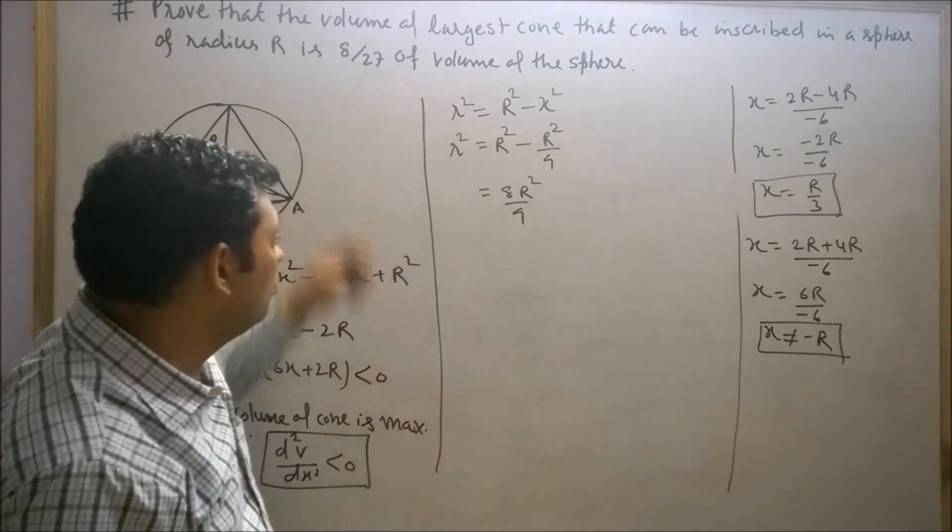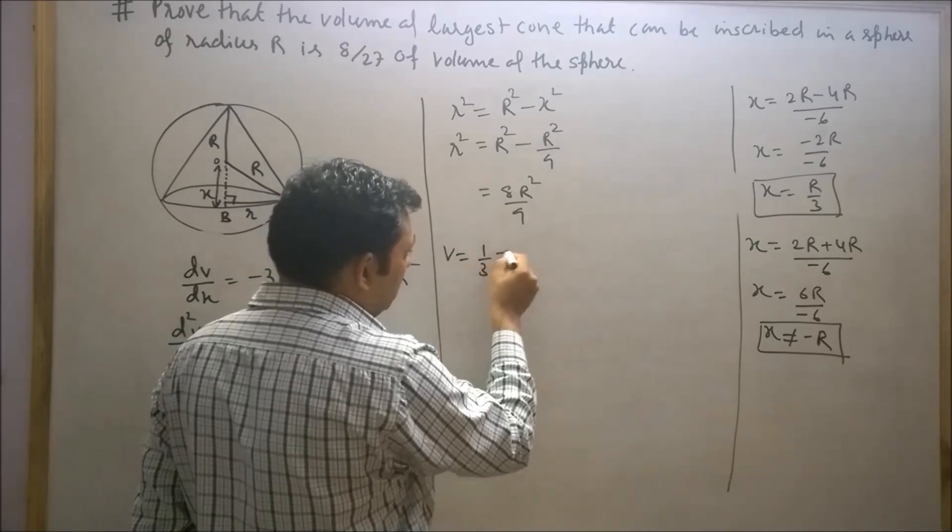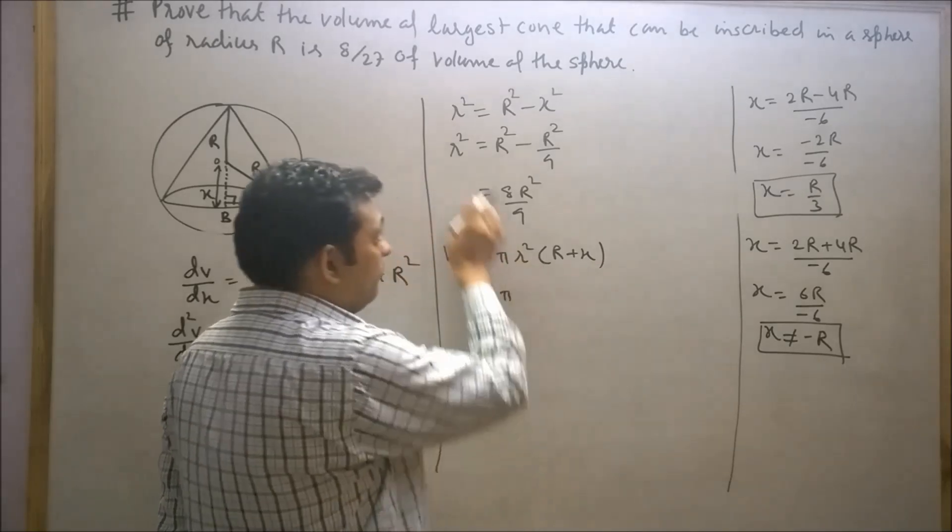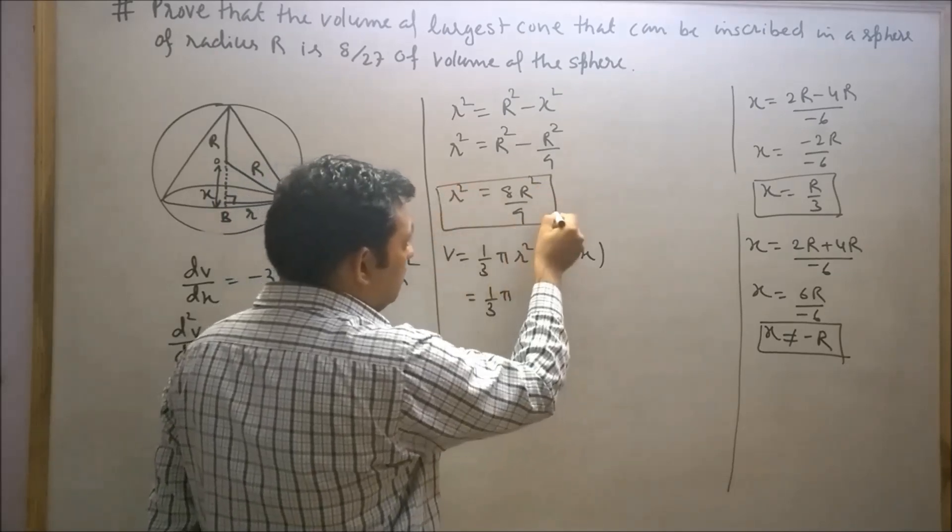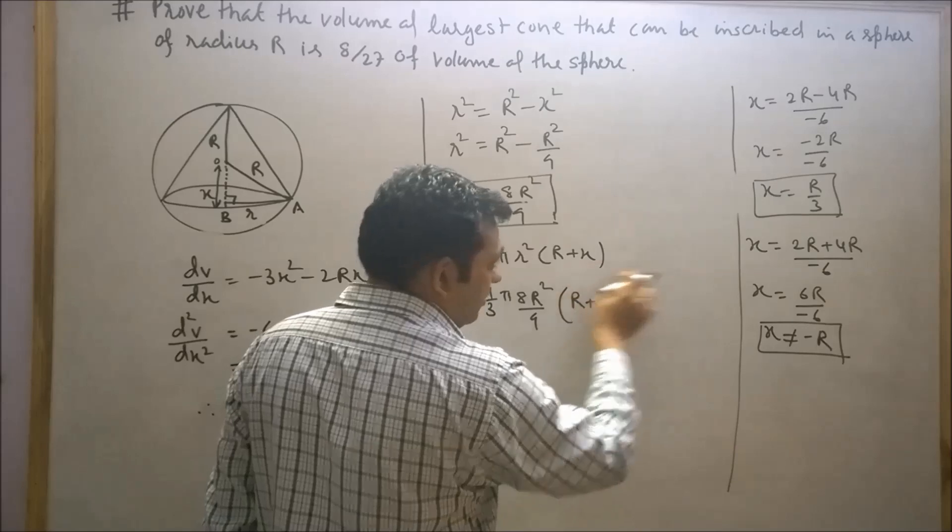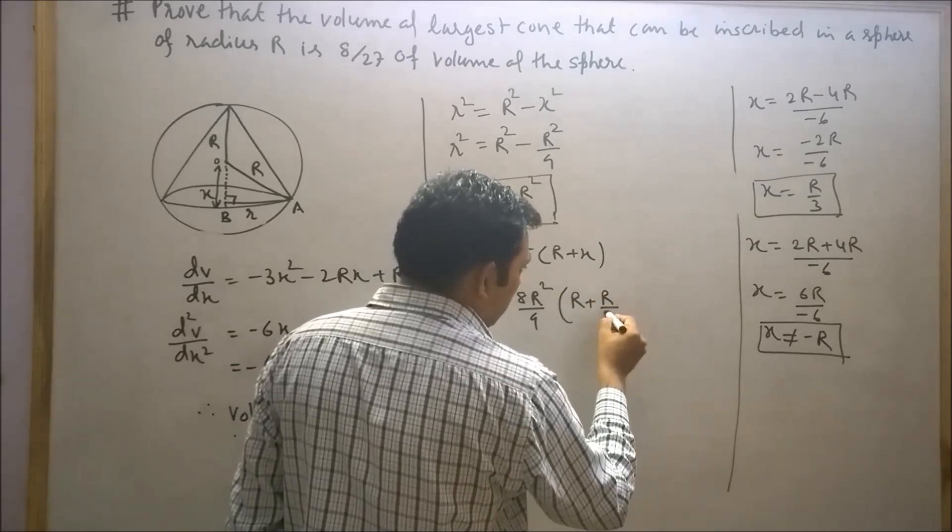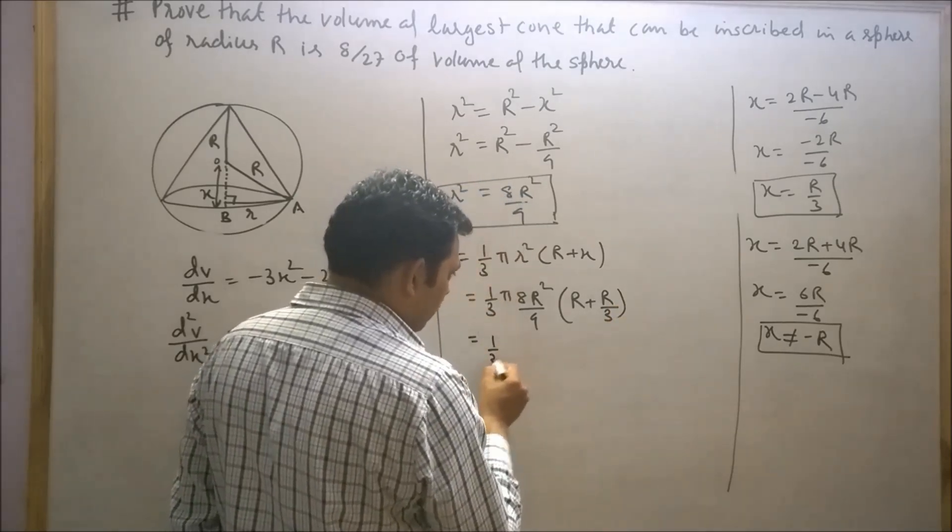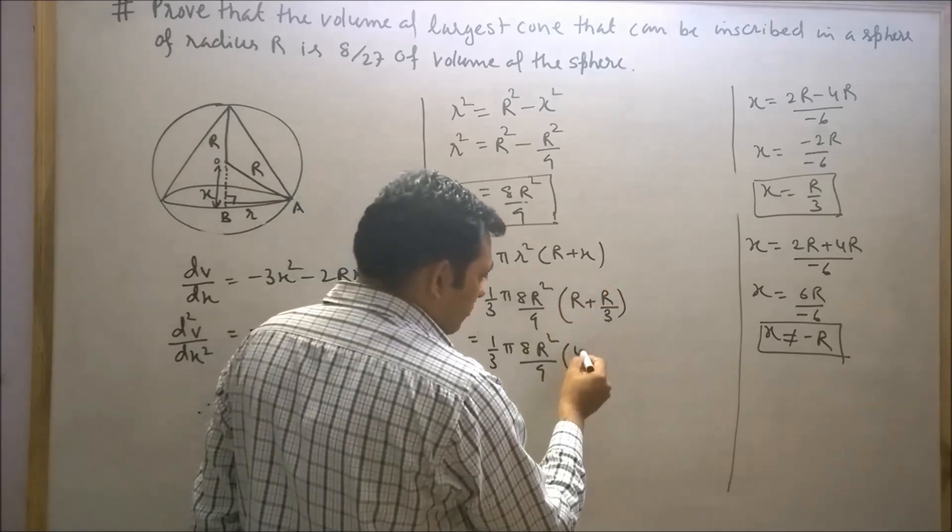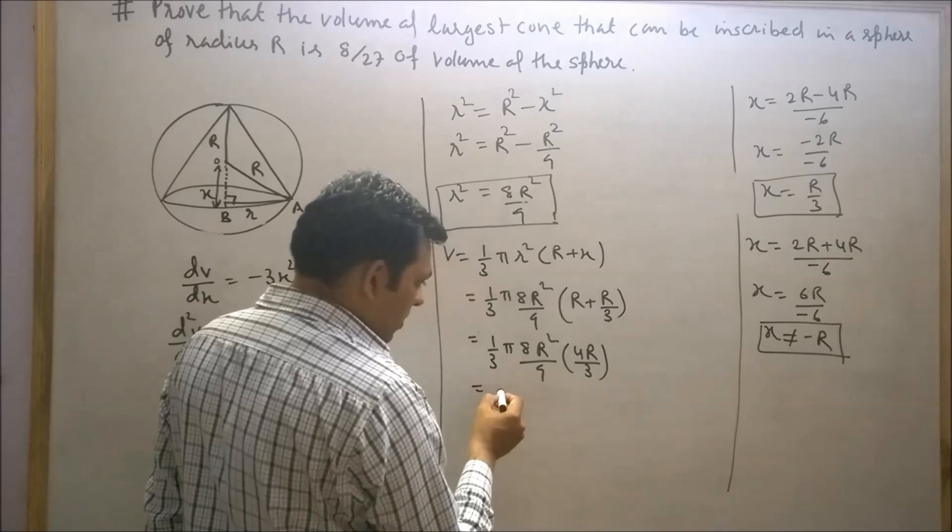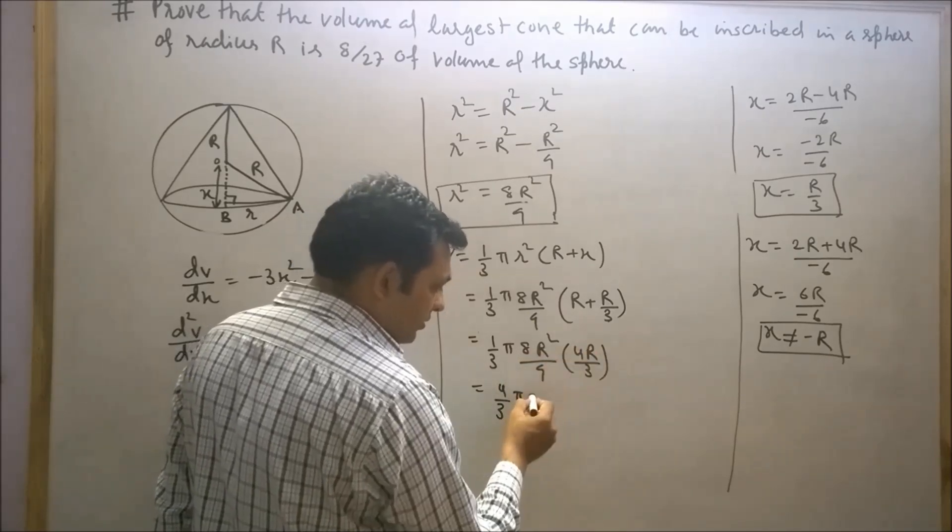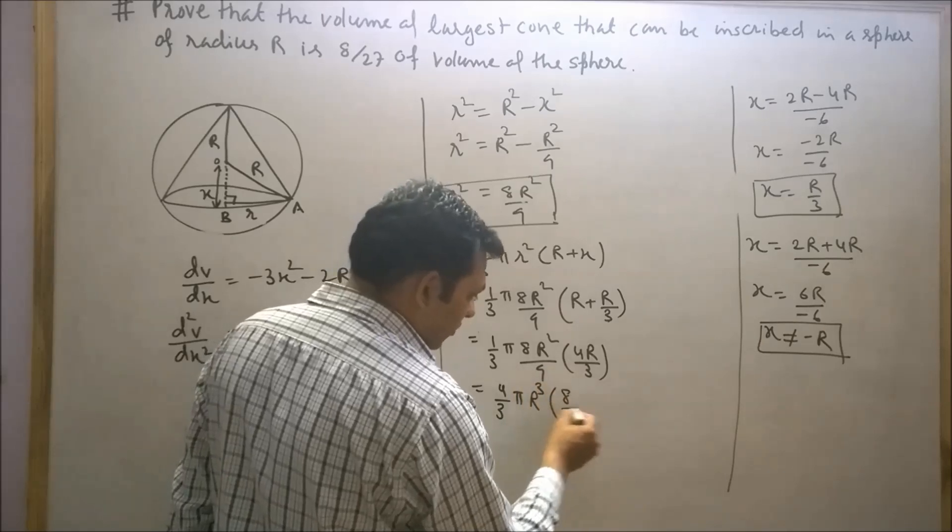Now try to find the volume of cone. V equals 1/3 π r²(R + x). Put the value of r² as 8R²/9 and x equals R/3. This will equal 1/3 π (8R²/9)(4R/3), which can be written as 4/3 π R³ times 8/27. This is the volume of sphere times 8/27.